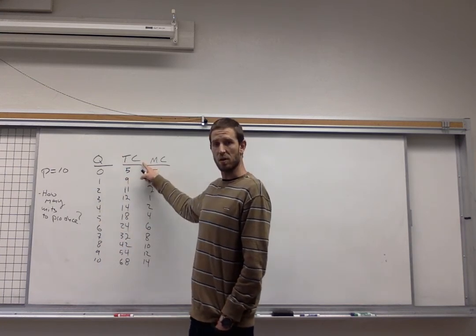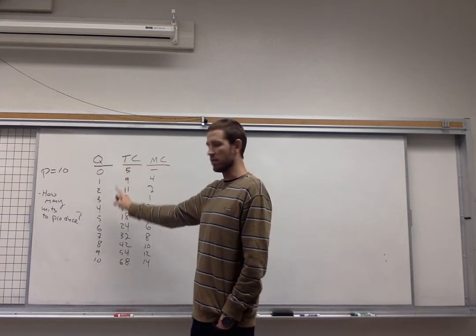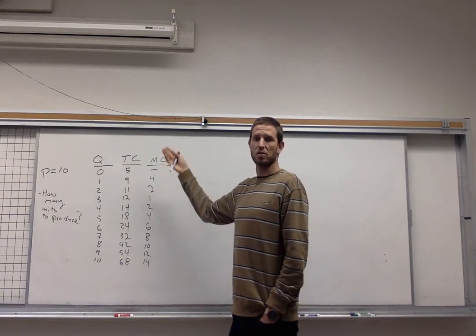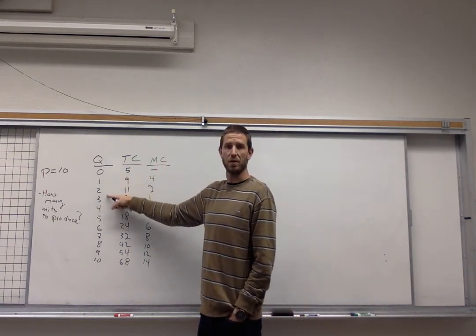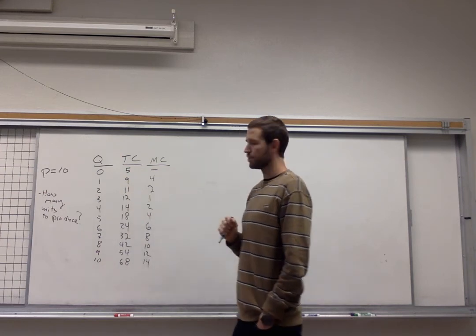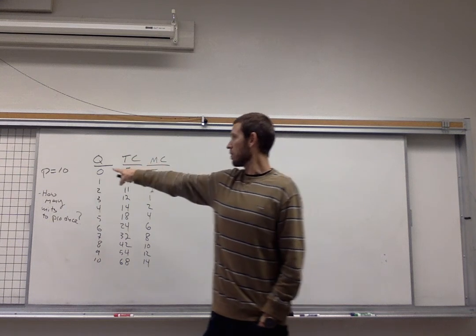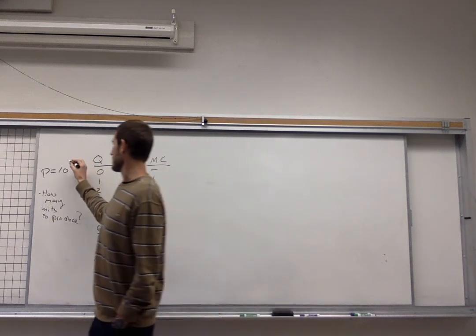The total cost that's going to go along with producing each respective level of output and the marginal cost which measures the extra cost as they decide to produce one more unit as you're moving down each row in our table. For the purposes of our demonstration we want to assume that the price that this firm has to charge is going to be ten bucks. That's going to be key for us.